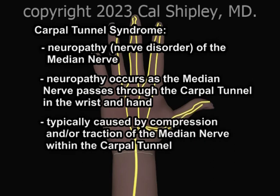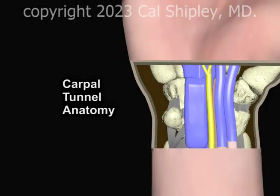Typically, the neuropathy occurs as a result of compression or traction of the nerve within the carpal tunnel. Like many disorders of the human body, knowledge of the underlying anatomy in Carpal Tunnel Syndrome is essential to understanding the disease process.